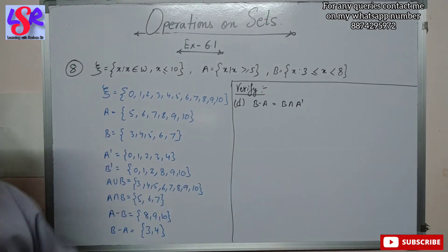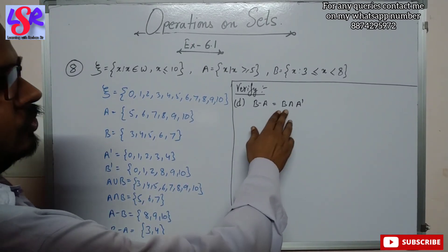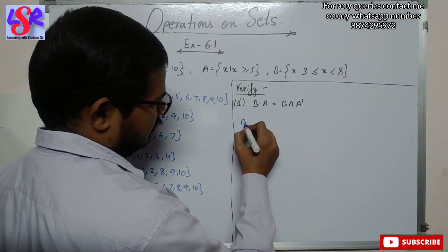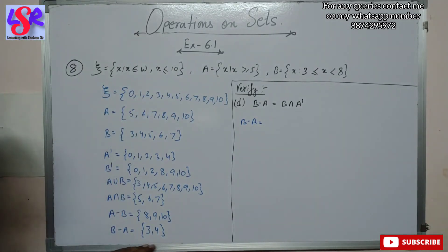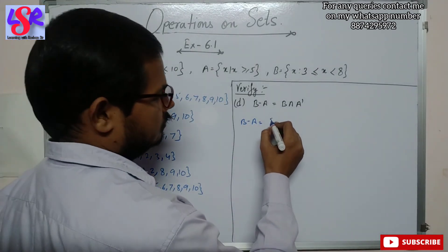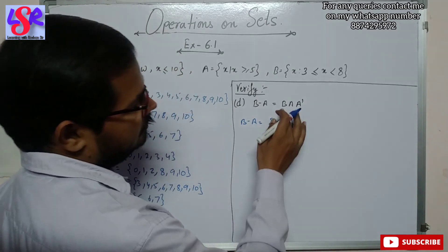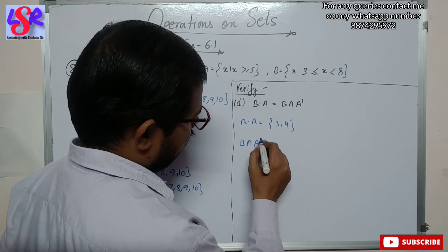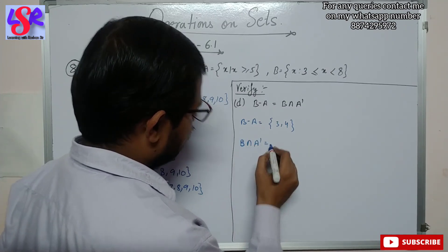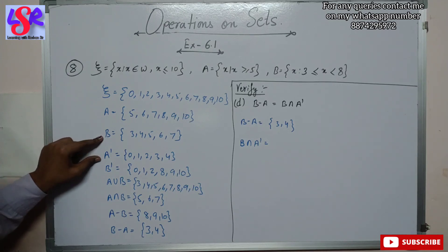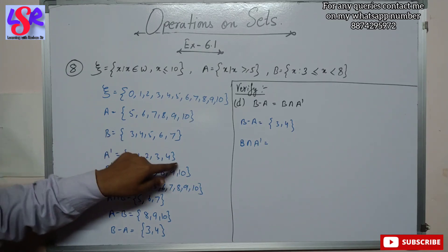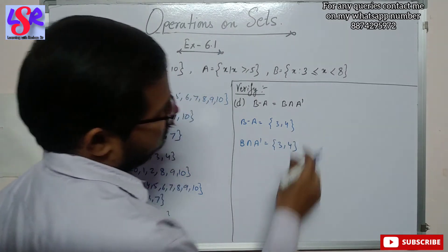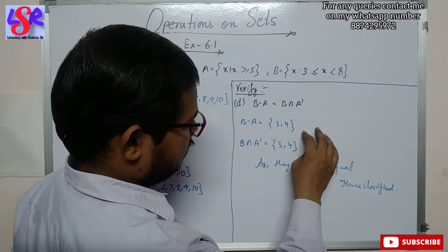Part D verifies B minus A equals B intersection A complement. B minus A = {3, 4}. B intersection A complement is the common of B = {3,4,5,6,7} and A complement = {0,1,2,3,4}, giving {3, 4}. Both sets have the same elements, hence verified.